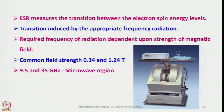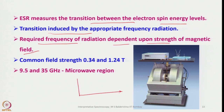ESR or EPR measures the transition between the electron spin energy levels. The transition is induced by the appropriate frequency of radiation, and the required frequency of radiation depends upon the strength of the magnetic field. As we increase the magnetic field, the energy gap between the spin states steadily increases, and higher magnetic field strength requires higher microwave radiation to achieve the transition.